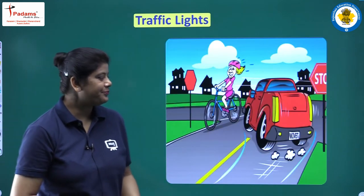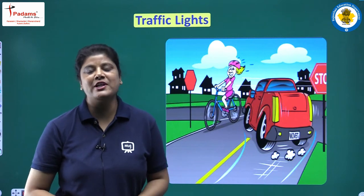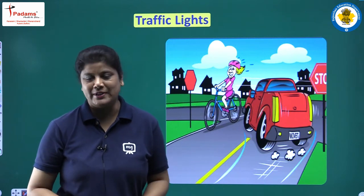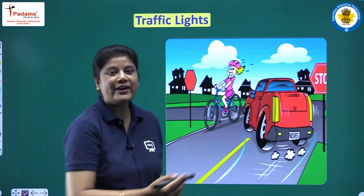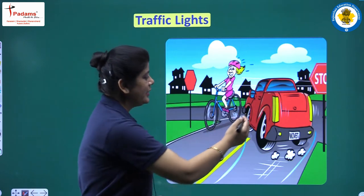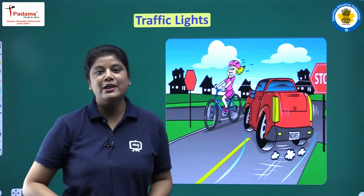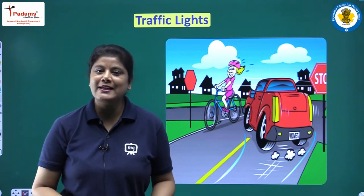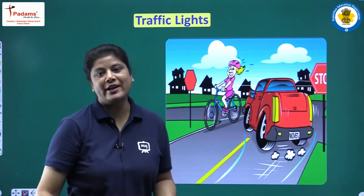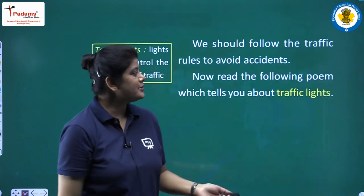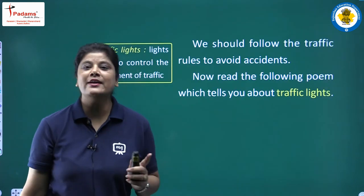See this image. Where are traffic lights? They are on roads where two roads meet. Look, this is a cycle rider and this is a car. What could happen here? An accident — because there is no traffic light. So we should follow the traffic rules to avoid accidents.